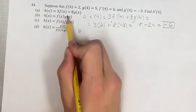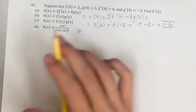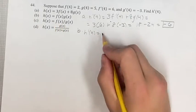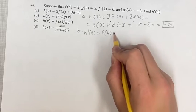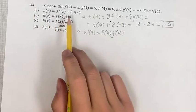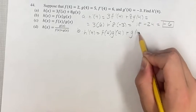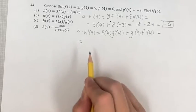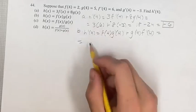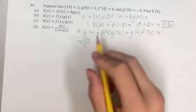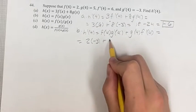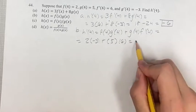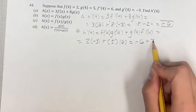For part b, we do have a composition of functions, so we're going to have to use the product rule. So h prime of 4 equals the first times the derivative of the second — so f times the derivative of g — plus the second times the derivative of the first — so g times the derivative of f. Now we can plug in, because we know all of these. f of 4 is 2, derivative of g is negative 3, plus g of 4 is 5, derivative of f is 6. So this is negative 6 plus 30, which is 24.